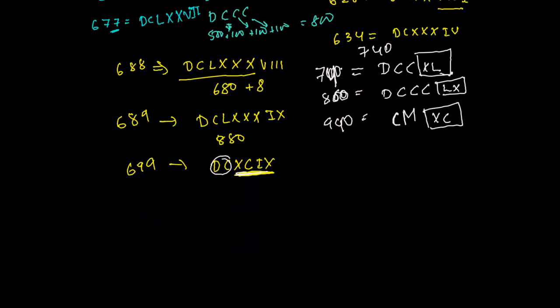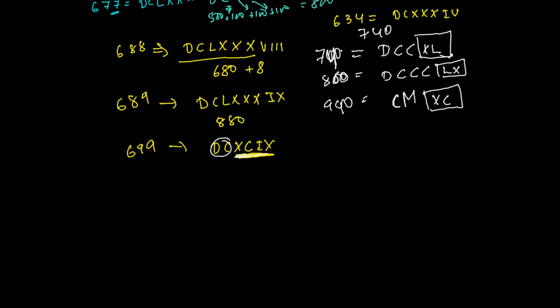I think I need to do two more examples and then you will be clear. Let me write 888, 777, 666, 999. Let's write 888. It's going to be one of the biggest ones. From 0 to 1000, I think this is the biggest Roman numeral in appearance.